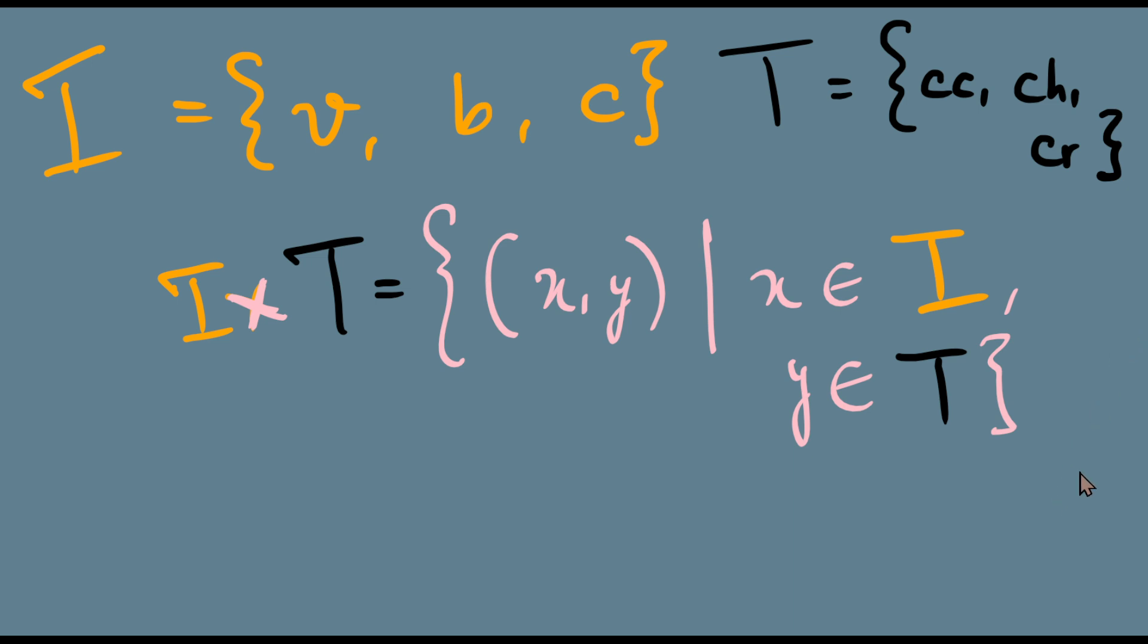This is a descriptive form. But now we know the sets I and T explicitly. So maybe we can write down what I cross T is. I cross T, and this cross is read as the Cartesian product.